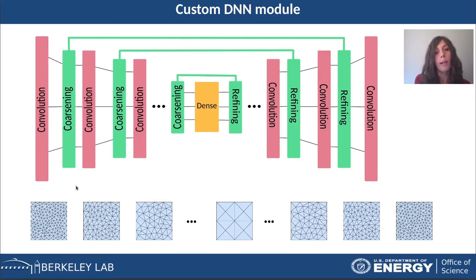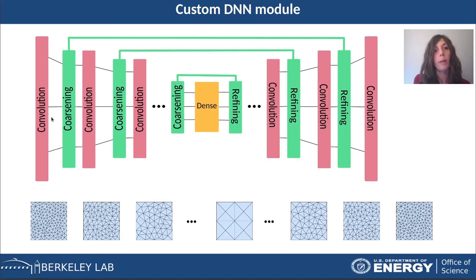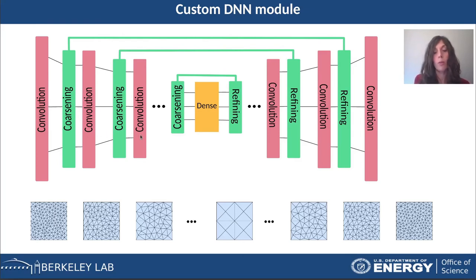More precisely, what this module does is the following. It takes as input a graph, then applies convolution on its features, then coarsens the graph, applies convolution again, coarsens again, convolution, and so on, until the graph is small enough.